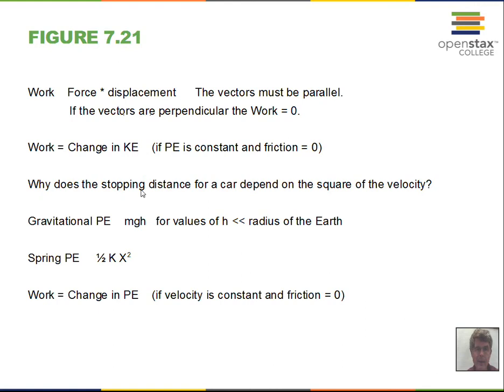The stopping distance relationship is governed by work equals change in kinetic energy, and kinetic energy is proportional to the square of velocity. In a car, the brakes do the work to stop the car. The brakes have a certain force available; force times the displacement of the rotors past the brake pads gives negative work, and the kinetic energy decreases. The initial kinetic energy is one-half mv squared.